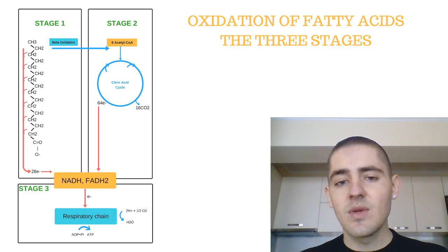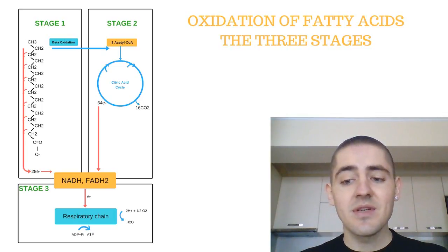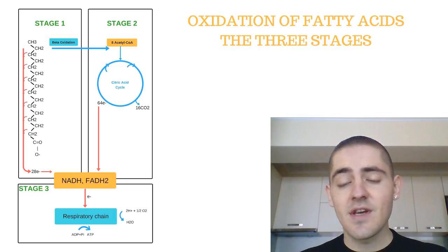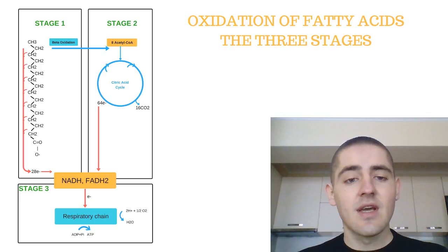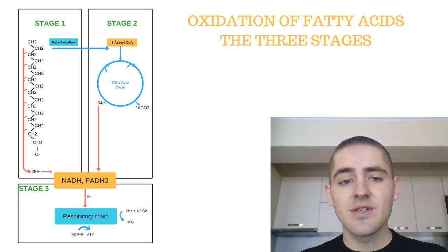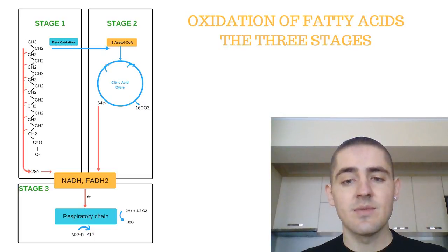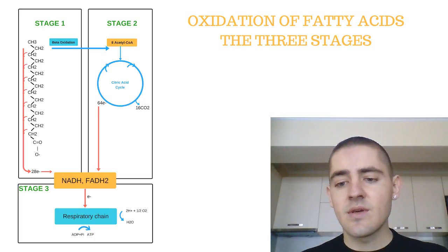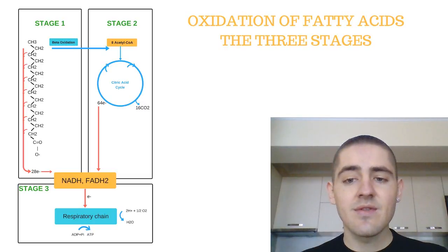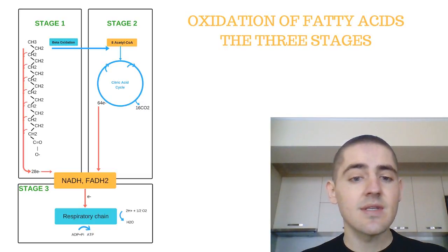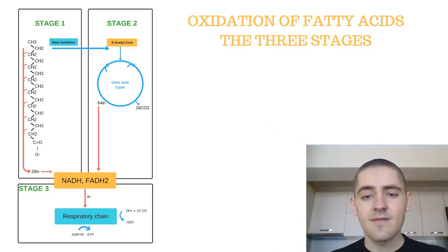In this video, we'll look at the big picture view of fatty acid oxidation as per section 17.2 of Lehninger's Principles of Biochemistry textbook. Mitochondrial fatty acid oxidation takes place in three major steps, as illustrated in the graphic on the left.